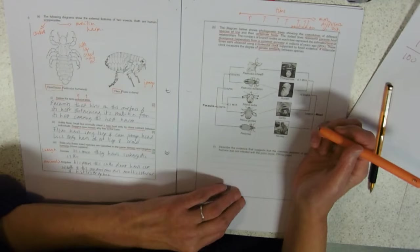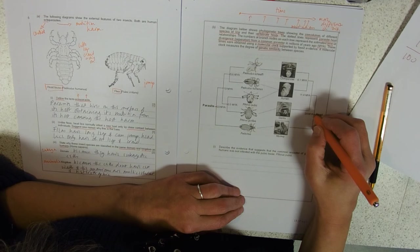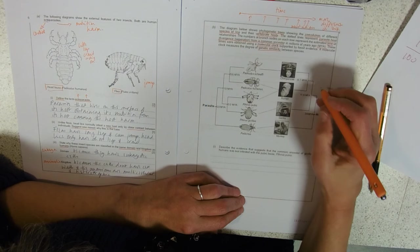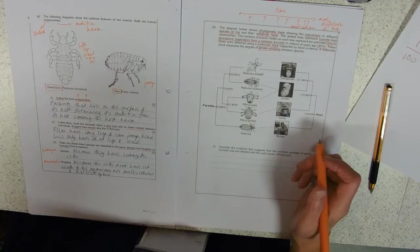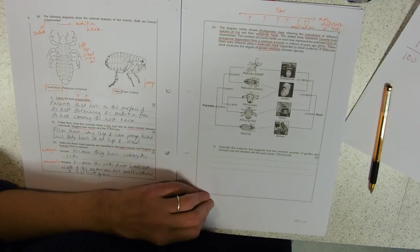The monkey evolutionary tree starts off 24 million years ago with a split between monkeys and apes. Then we've got 11.8 million years ago, gorillas split off. And then lastly, our closest relative, the chimpanzee, was a common ancestor 6.1 million years ago.